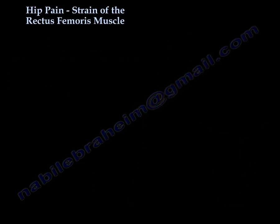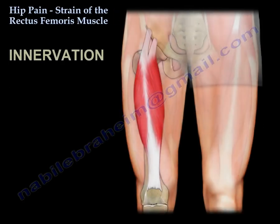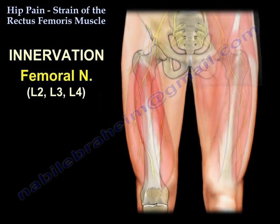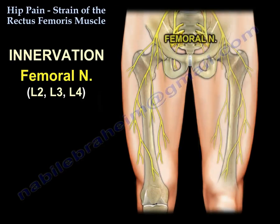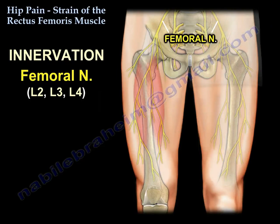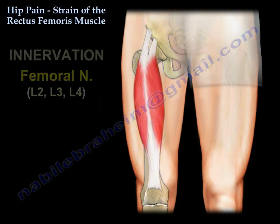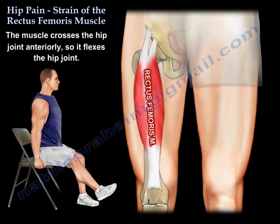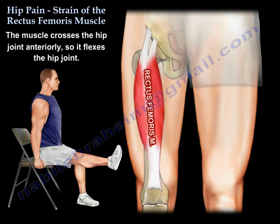The innervation comes from the femoral nerve, which is L2, L3, and L4. Because it crosses the hip and the knee, it flexes the hip joint.